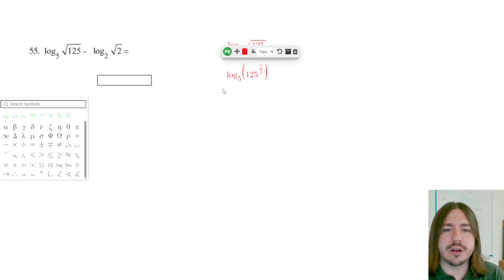So whenever you have a logarithm and you've got an exponent inside the logarithm, you can use something called the power property to rewrite this so that the exponent on the inside of the parentheses is now a coefficient of the logarithm itself.